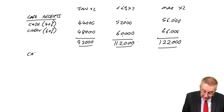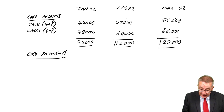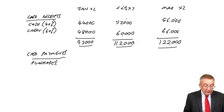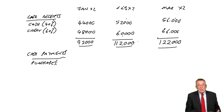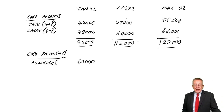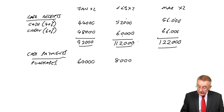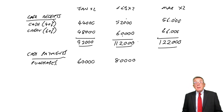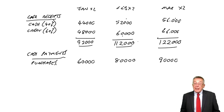Now we need to look at what the cash payments will be each month. First, purchases — we're told what the purchases are each month, but we pay the month following purchase. So December's purchases of 60,000 are paid in January. January's purchases of 80,000 are paid in February. February's purchases of 90,000 are paid in March. March's purchases won't be paid until April, so not relevant.